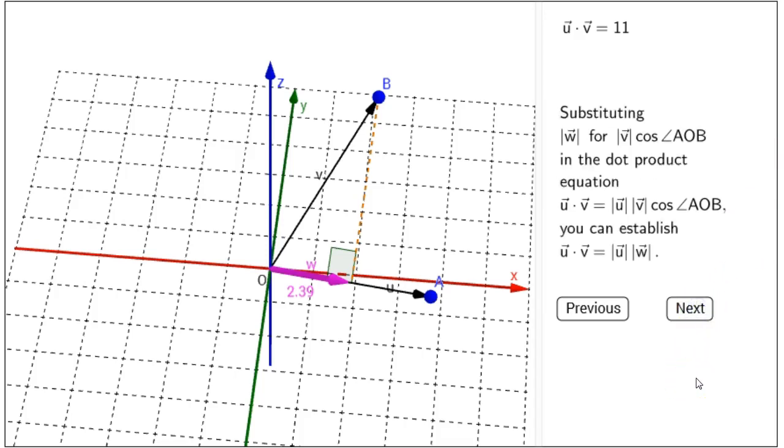Now, we can substitute. If I substitute the length of W for length of V cosine angle AOB in the dot product equation, that one right there, then we establish what we wanted, that U dot V equals the length of U times the length of W.